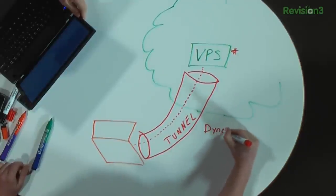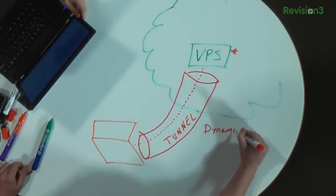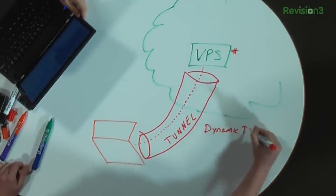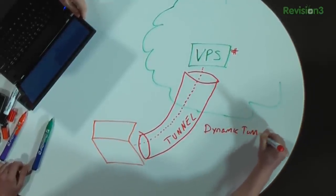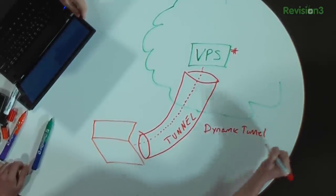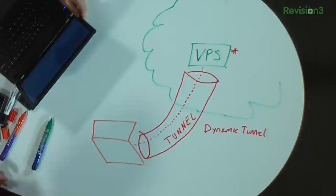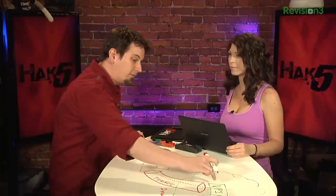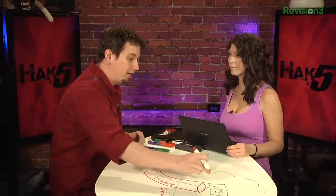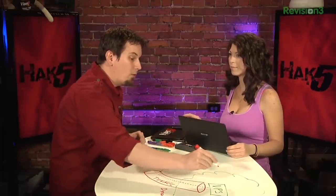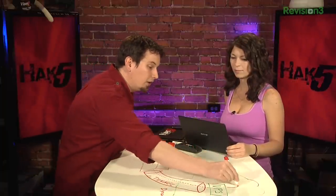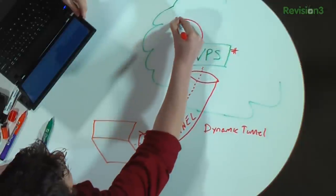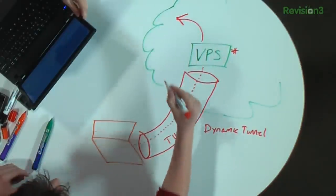What you did with that dynamic tunnel is you basically said: I want to be able to, from this virtual private server, go out to other websites on the internet - like Facebook over here, or maybe Twitter.